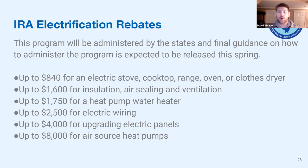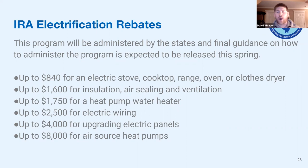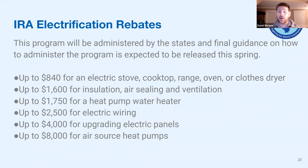Here are the specific rebate amounts: $840 for replacing your stove, oven, or clothes dryer; $1,600 for insulation, air sealing, and ventilation; $1,750 for a heat pump water heater. Many of these require electrical wiring changes — for example, most gas stoves have a 110-volt outlet behind them but most electric stoves require 220 volts. The federal government allocated up to $2,500 for electric wiring and up to $4,000 for upgrading your electric panel. And there's an $8,000 rebate for air source heat pumps.